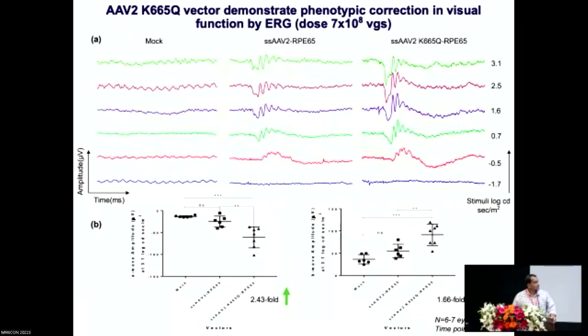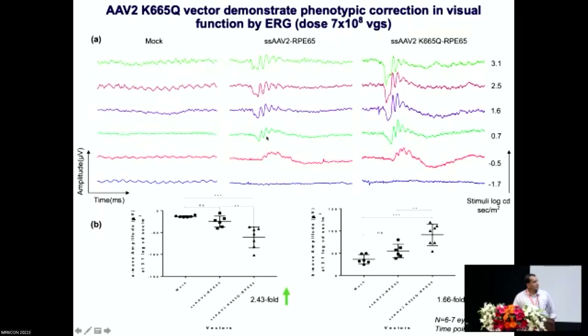This is the ERG done in a congenitally blind mouse because the RPE65 gene has been knocked out. In the untreated animal, when you shine light on their eyes, you see no A-wave and B-wave, signifying no phototransduction. With unmodified viruses containing the therapeutic RPE65 gene, you do see some level of A-wave — a photoreceptor response — but there is no ganglion cell response. With the modified vectors we have used, there is a clear rescue of phenotype in mice that received RPE65 under the improved vector systems.